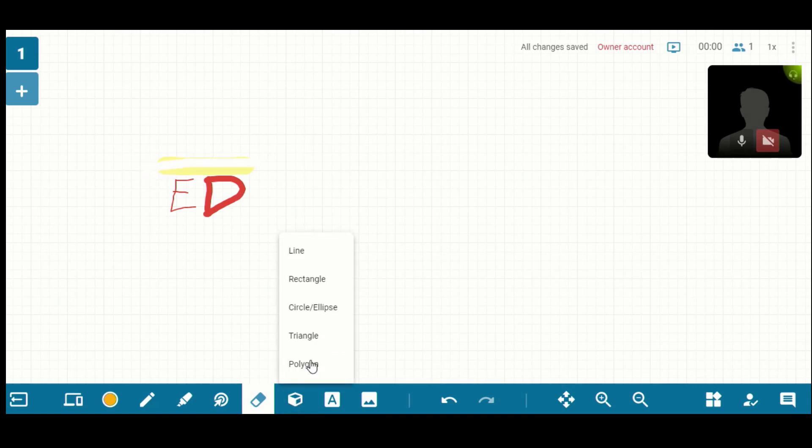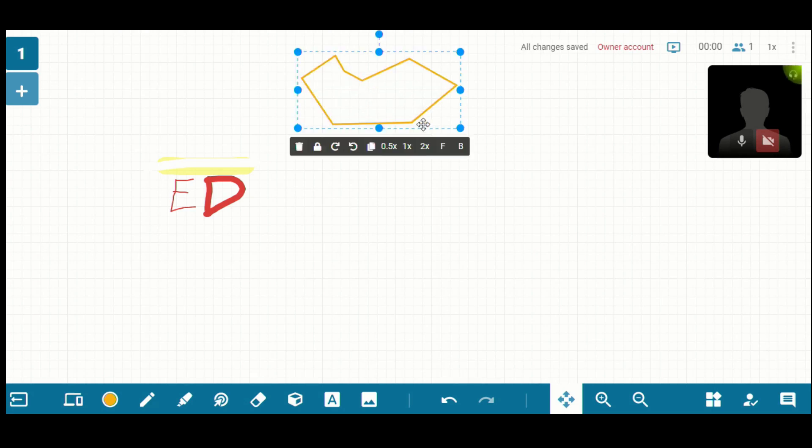There's the draw shape tool. So you can draw straight lines, rectangles, circles, ellipses, triangles, and polygon. If you wanted to create your own shape, so you can just click and it creates a new point. And then when you bring it back to the start point, you have your shape and then you can delete, lock, you can rotate it. And there's all different options.